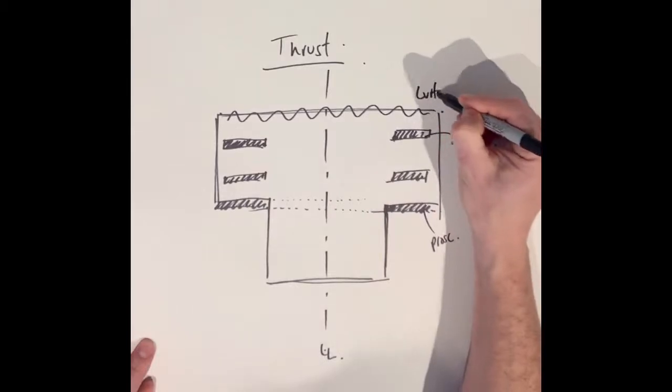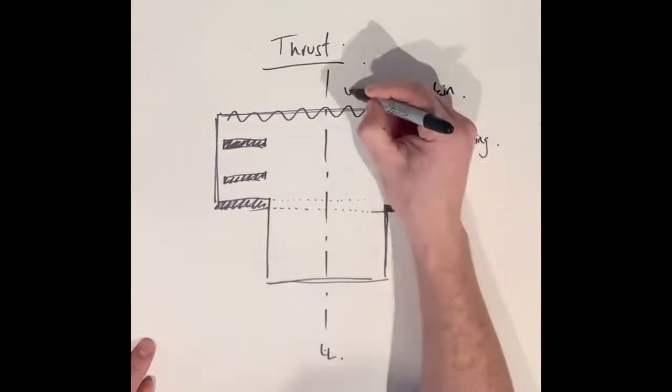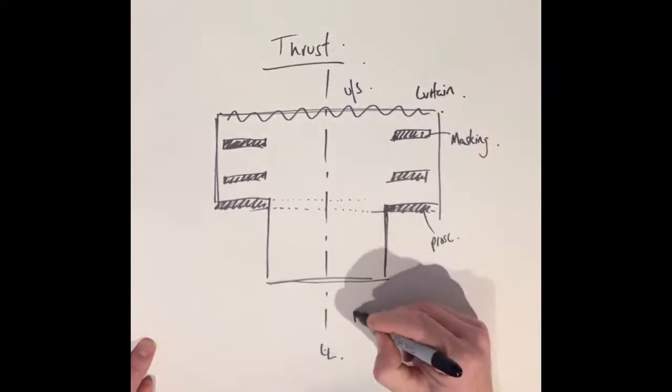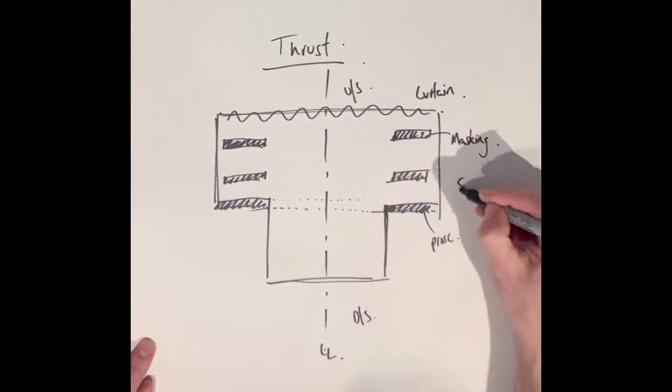I'm putting a curtain across the back which I'm using a squiggly line for and labeling it appropriately. This could be a cyclorama or a backdrop or just a black curtain.